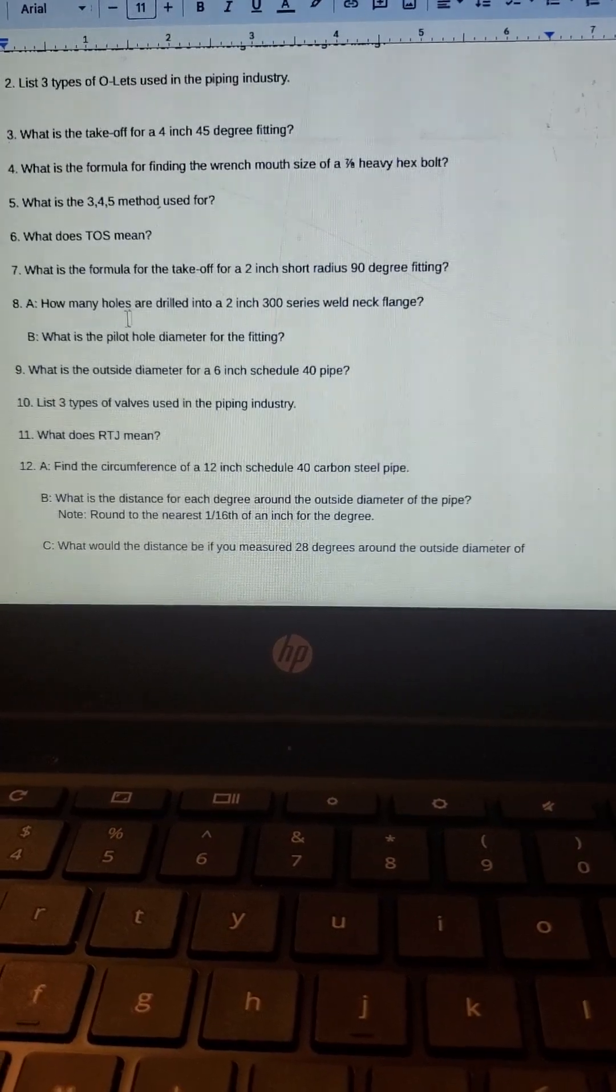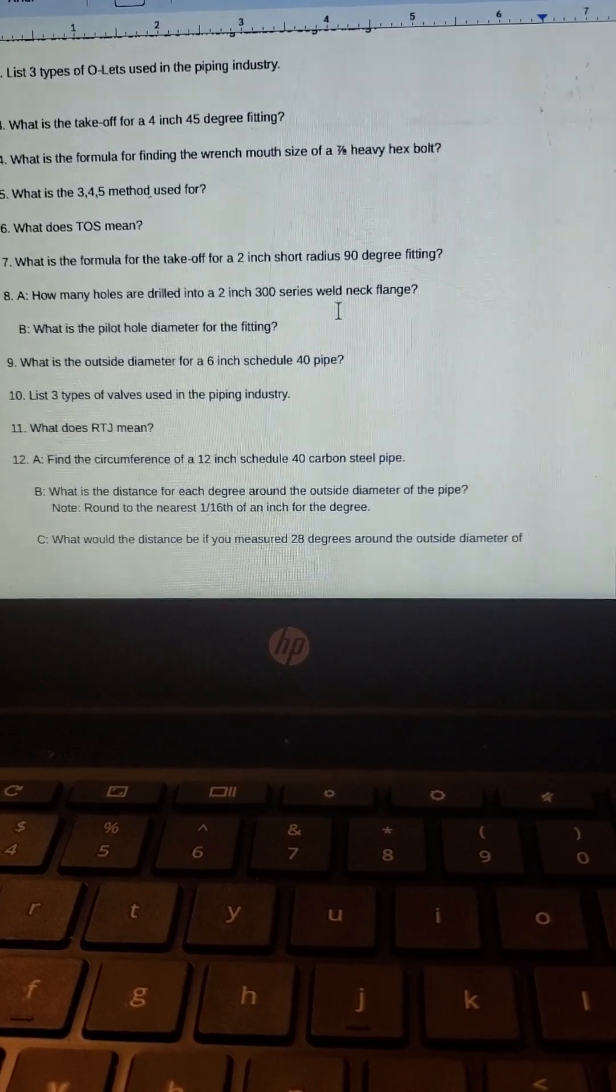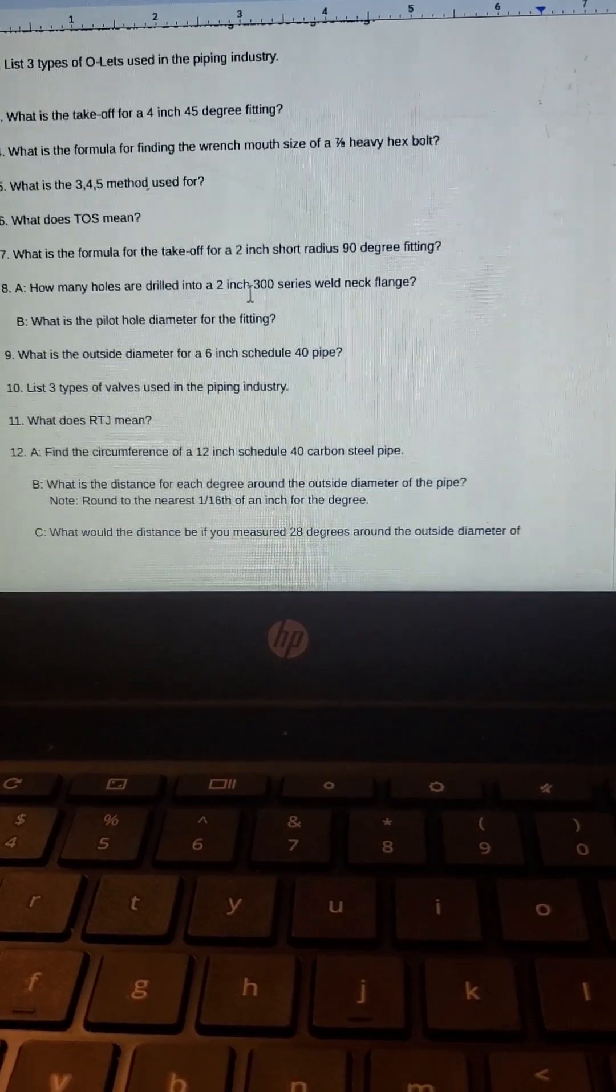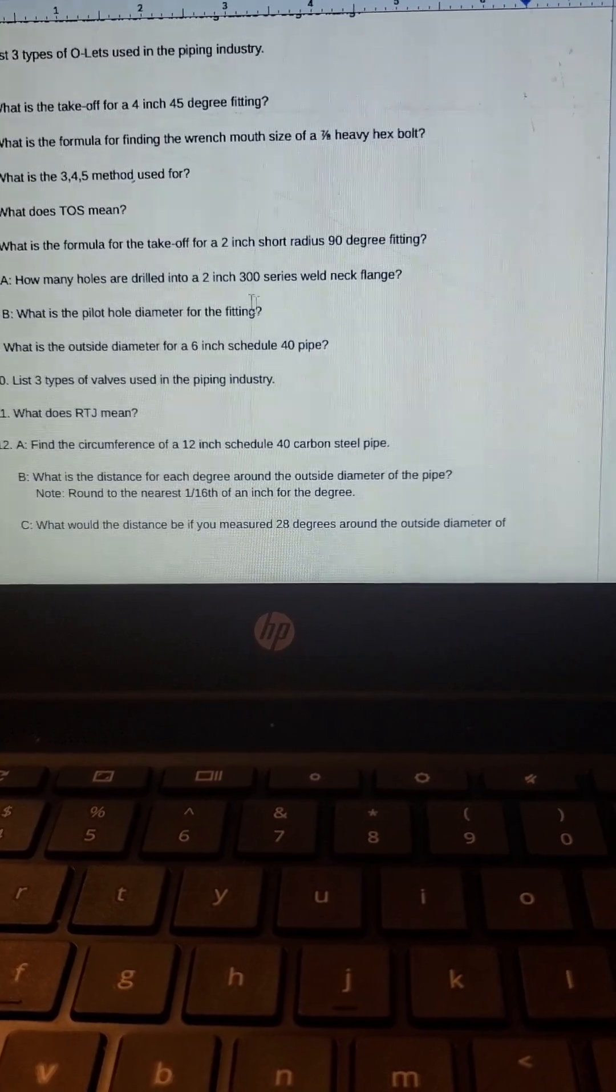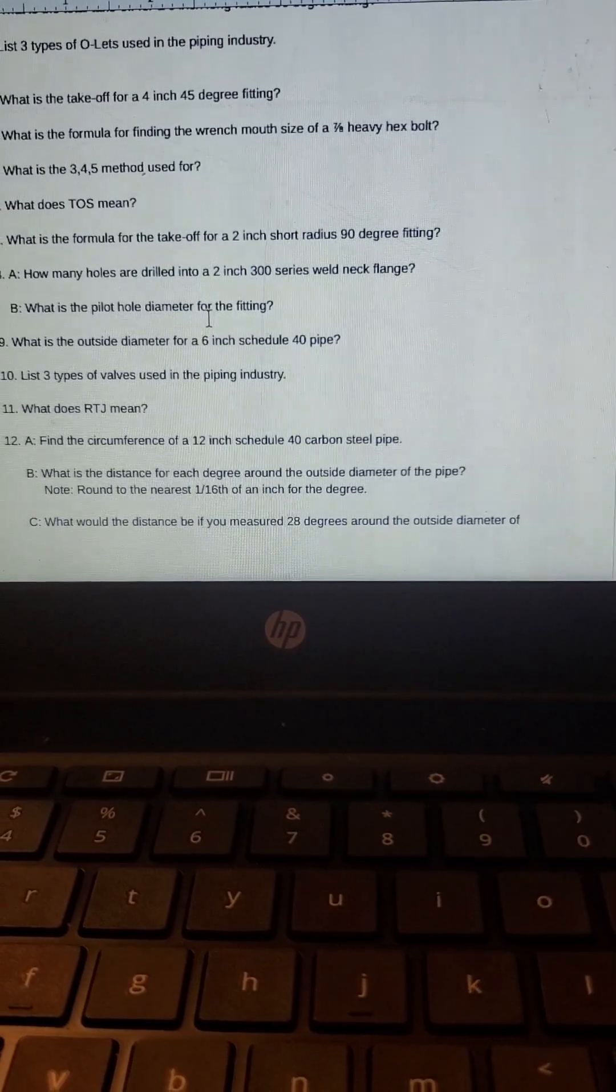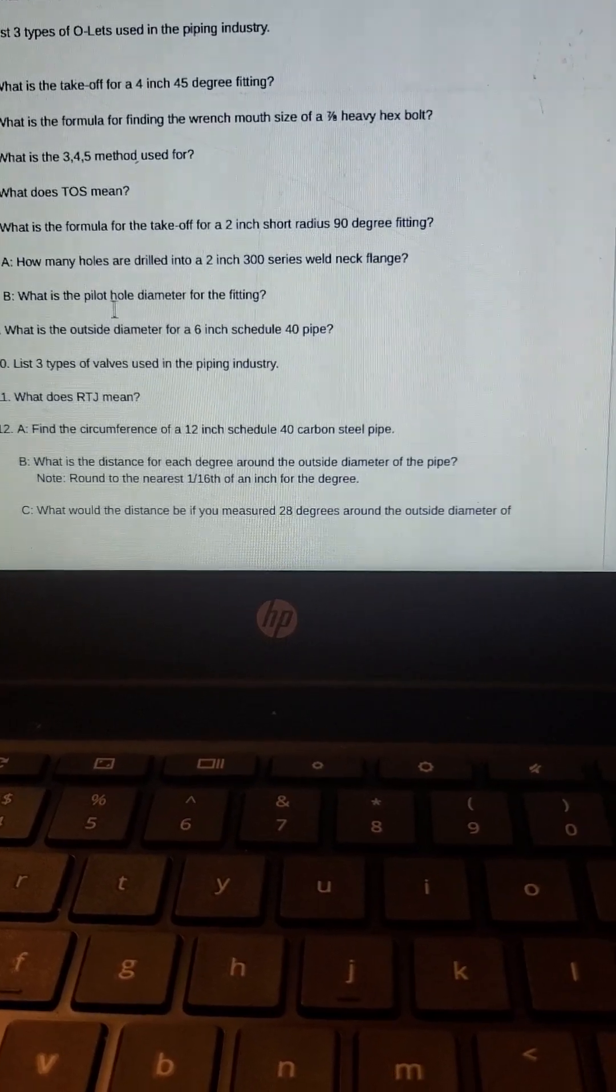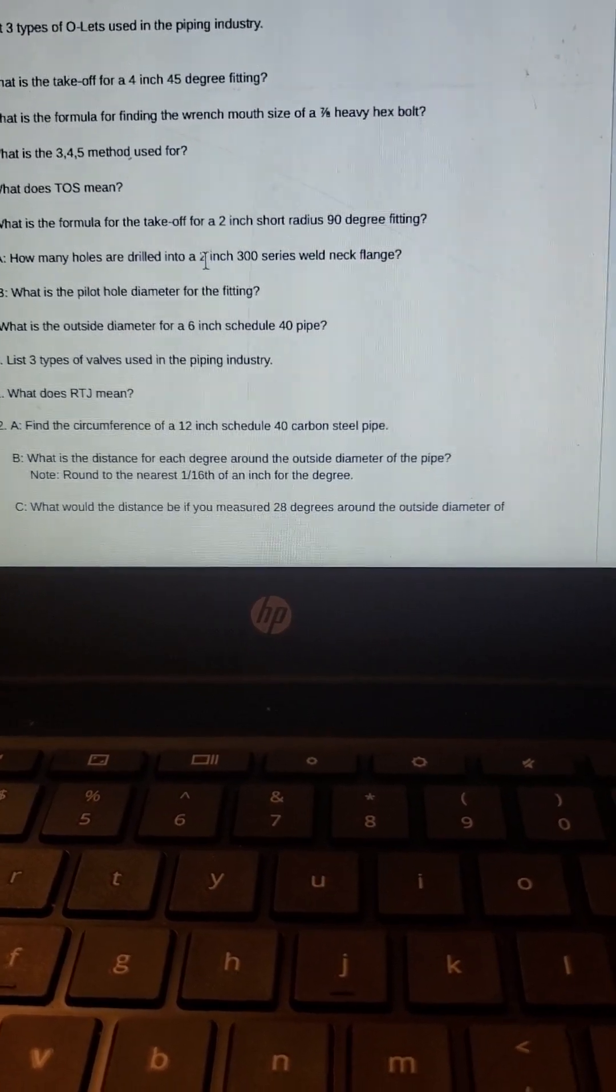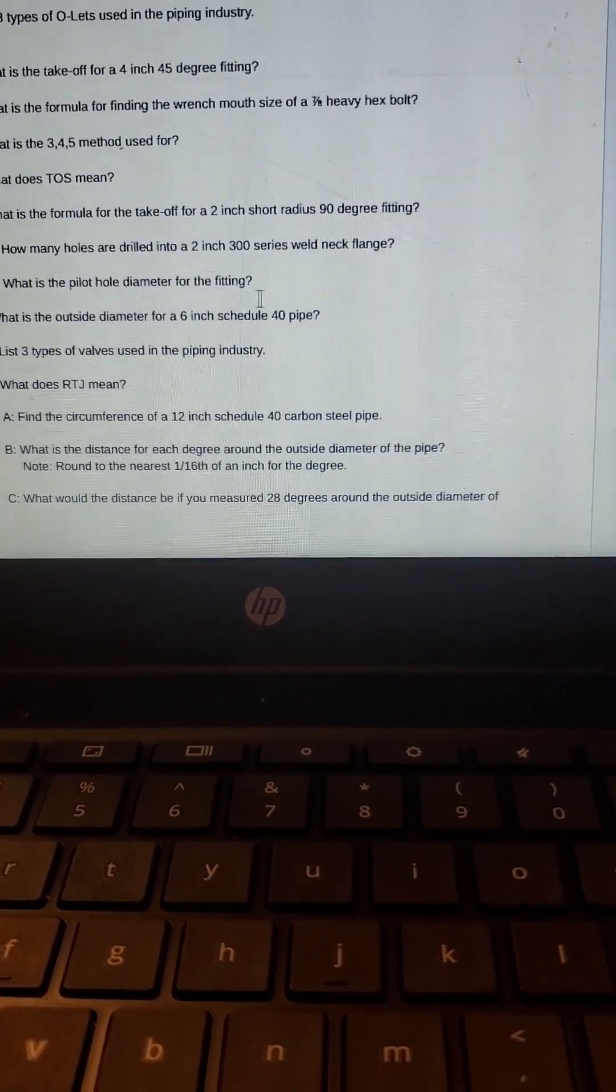How many holes are drilled into a two inch 300 weld neck flange? Weld neck flange really isn't that important, it's the 300 series what you're talking about. That would be eight holes. What is the pilot hole diameter for the fitting if you're running two inch pipe? In the pilot holes you want to go by the diameter of the pipe. It's going to be 11/16 holes because you're running 5/8 bolts.